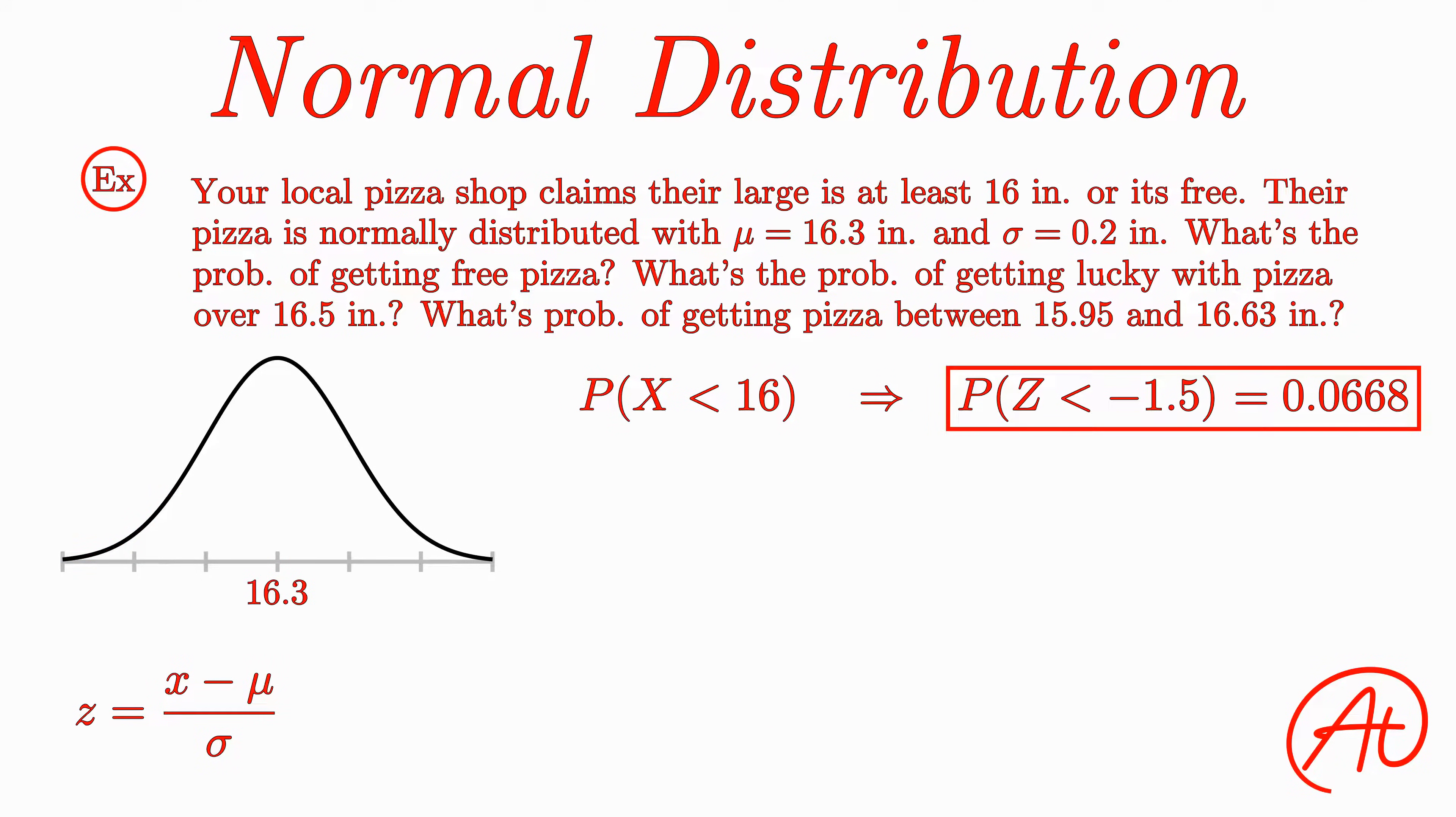Next, we want to find the probability of a pizza being over 16.5 inches. Like before, our first step is to find this data point's z-score, which equals 16.5 minus 16.3 divided by 0.2, or 0.2 over 0.2, or just 1.